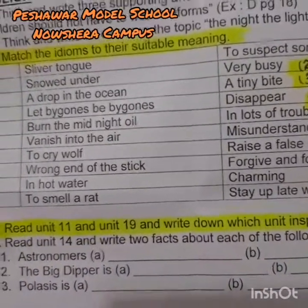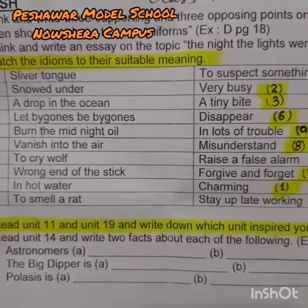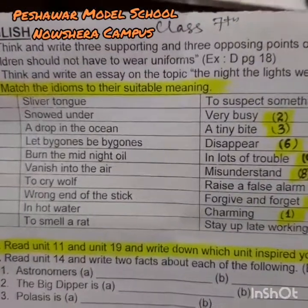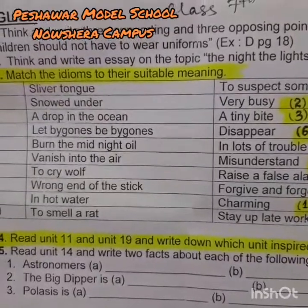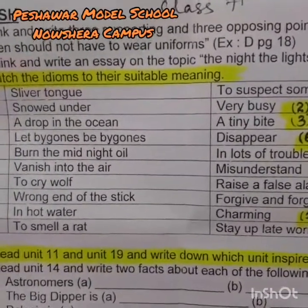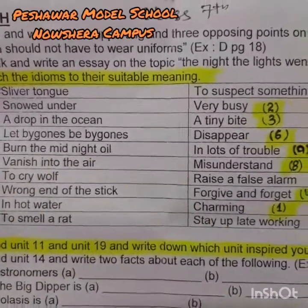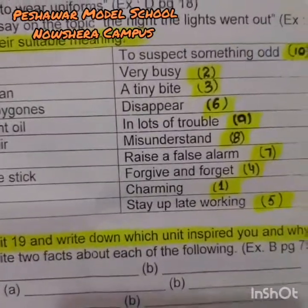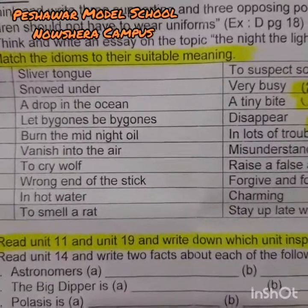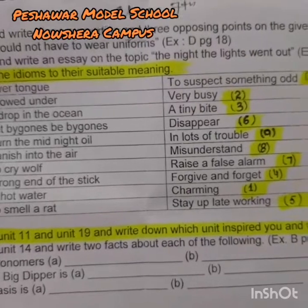Third is 'a drop in the ocean,' which means a tiny bit — something very small. Next, 'let bygones be bygones' — jo baat ho gai wo khatam ho gai, kisi ko maaf karna, dar guzar karna. It's number four: forgive and forget. In your SVT copy, write the idiom first, then its meaning below it neatly. Number five: 'burn the midnight oil' means to stay up late working.